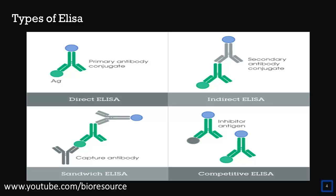In competitive ELISA, the plate well is coated with reference antigen. The sample is mixed with antibody conjugate, so the antibody conjugate and the antigen interact with the sample, and that is added to the well containing the reference antigen. When the sample has fewer antigens, more free antibodies are present in the solution that will bind to the reference antigen and give a higher signal. Whereas when the sample has a higher number of antigens, there will be fewer free antibodies to bind to the reference antigen, so less signal is observed.